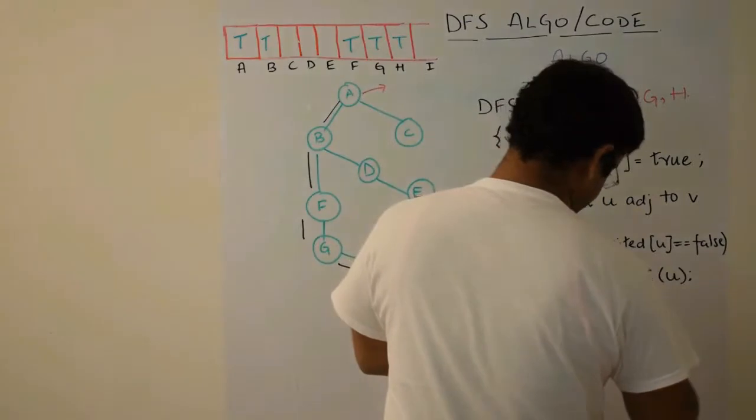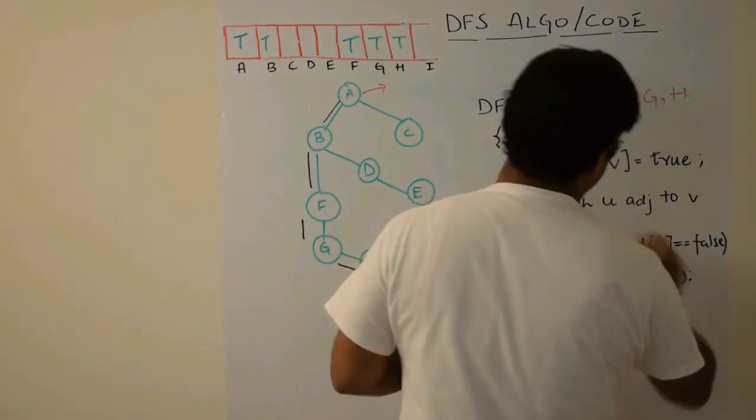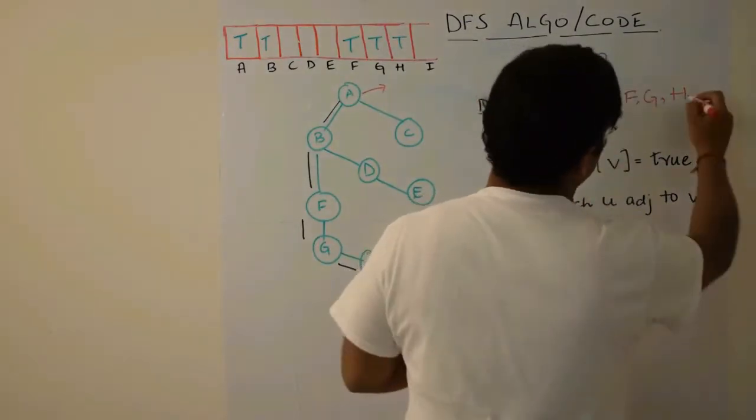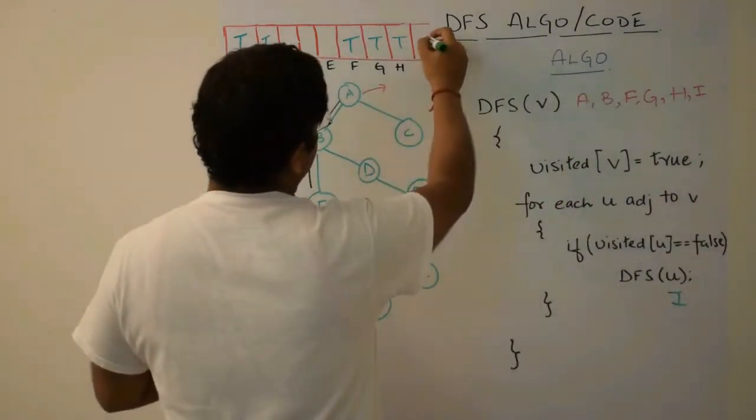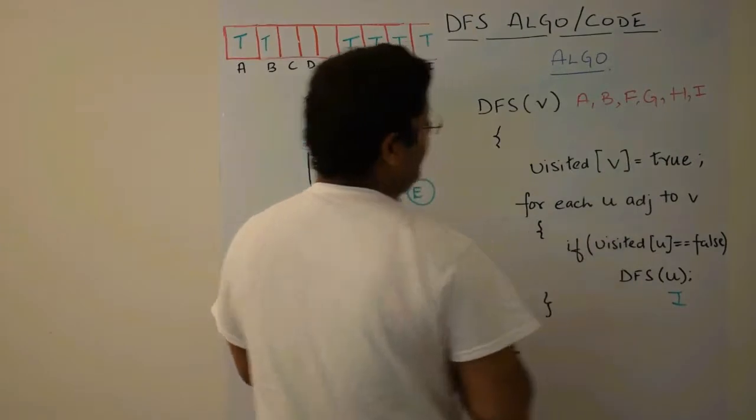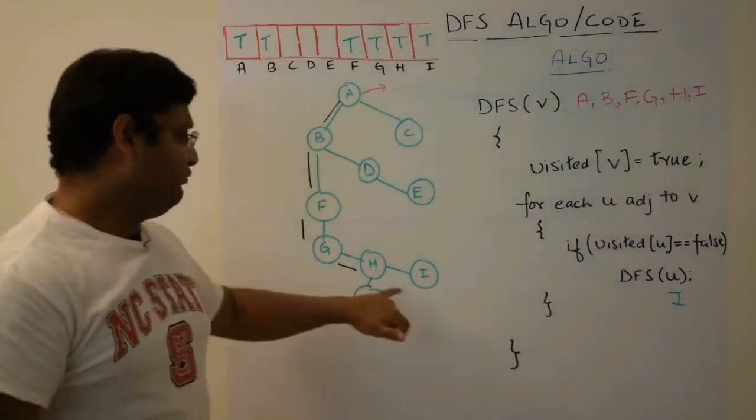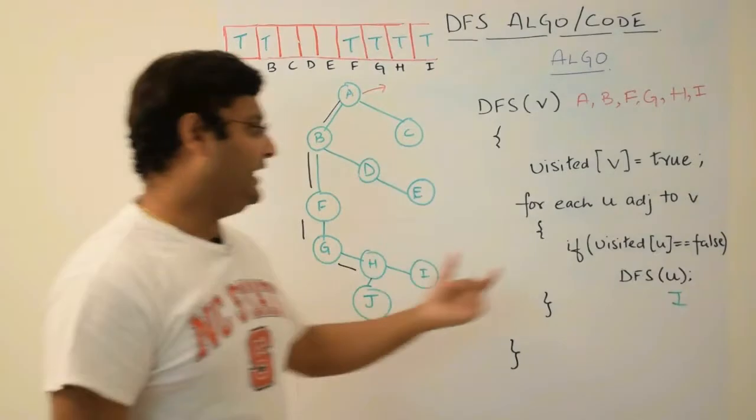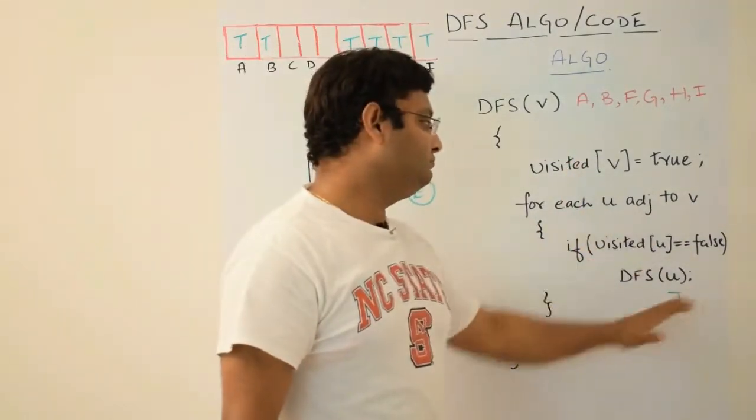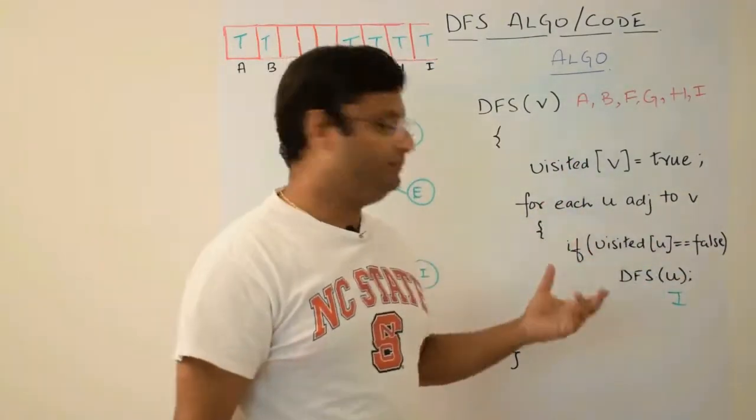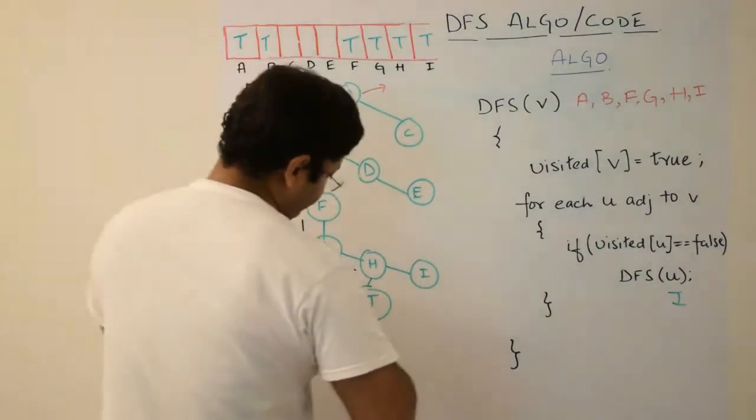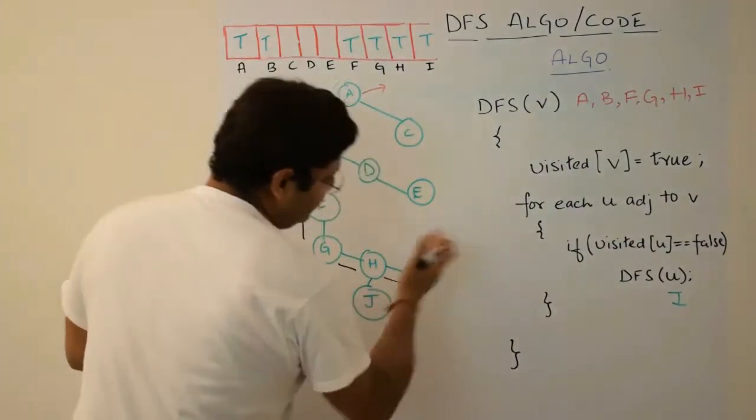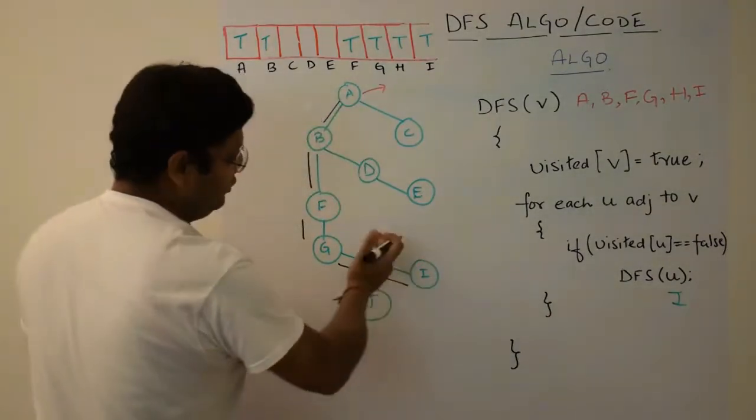I will come here and I will be marked as visited. Now what? Again what are the neighbours of I? Only one neighbour H and it has already been visited. So here nothing we can do. We will go back. That is we had come here. Nothing to do. Basically it is a dead end. We will go back.